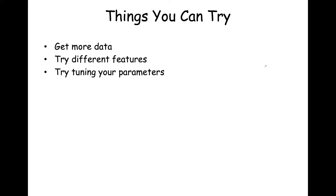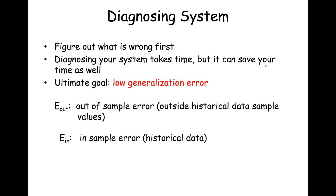There are lots of things you could try. You could get more training data — perhaps that new example was very different from the historical records. Maybe the features were not very descriptive; you can try a new feature generation approach, or change the hypothesis set. But which one should you try first? With this diagnosis, you want to figure out what's wrong first. Diagnosing your system takes time, but it can save you a lot of headache in the long run. Ultimately, the goal is low generalization error — a classifier that performs well has a low generalization error.